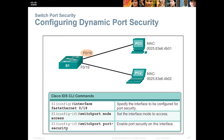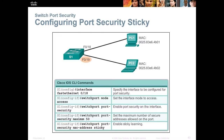To enable port security: navigate to the appropriate interface, set it to 'switchport mode access' so it's in access mode, then enter 'switchport port-security' to enable it. After enabling, you need to set the maximum number of secure addresses to learn, specify how to learn those addresses, and define what to do if a violation occurs.